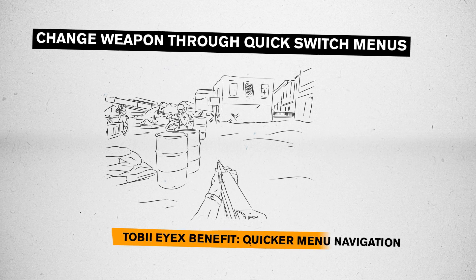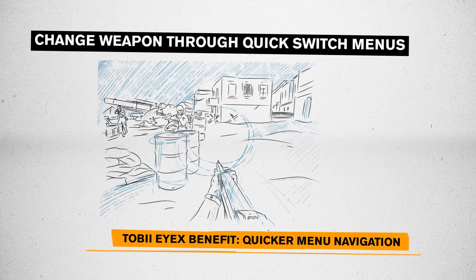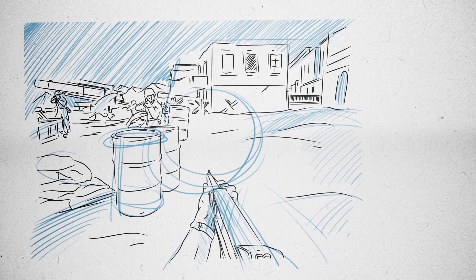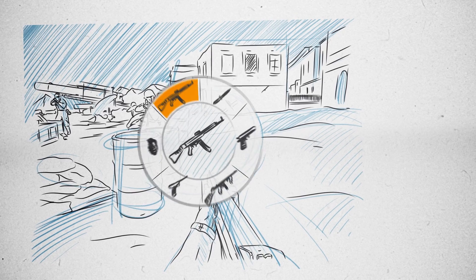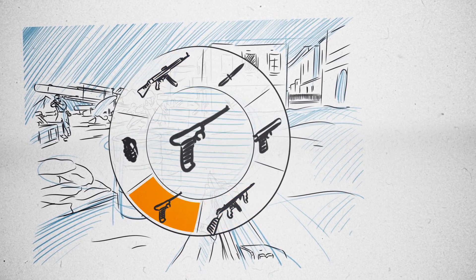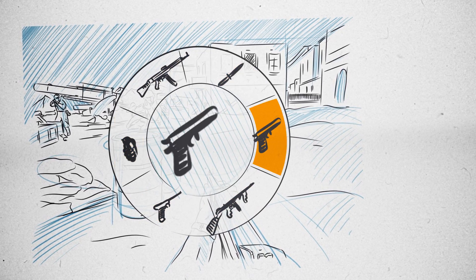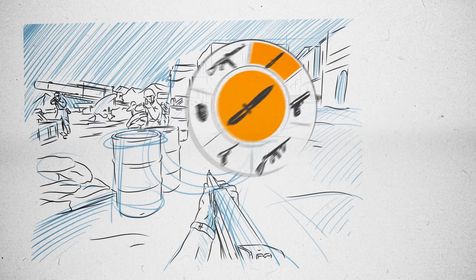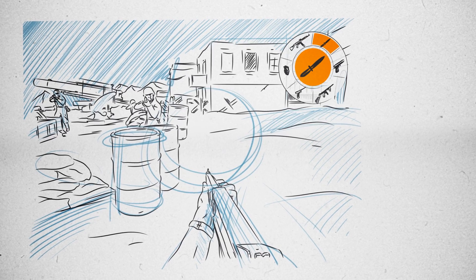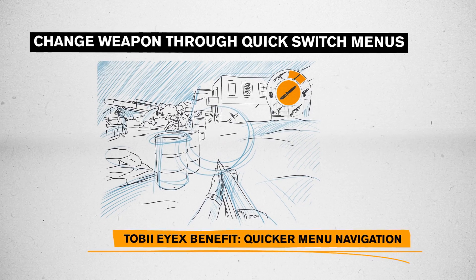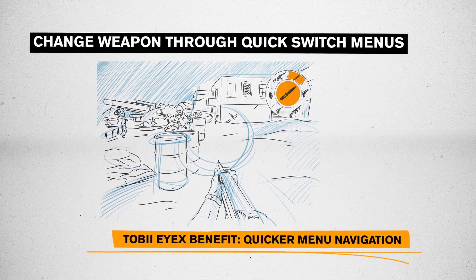Change Weapon Through Quick Switch Menus: Create gaze-triggered menus for favorite weapons, tools or preset voice commands. It reduces time spent on menu navigation and lets the gamer spend more time in the actual gameplay.